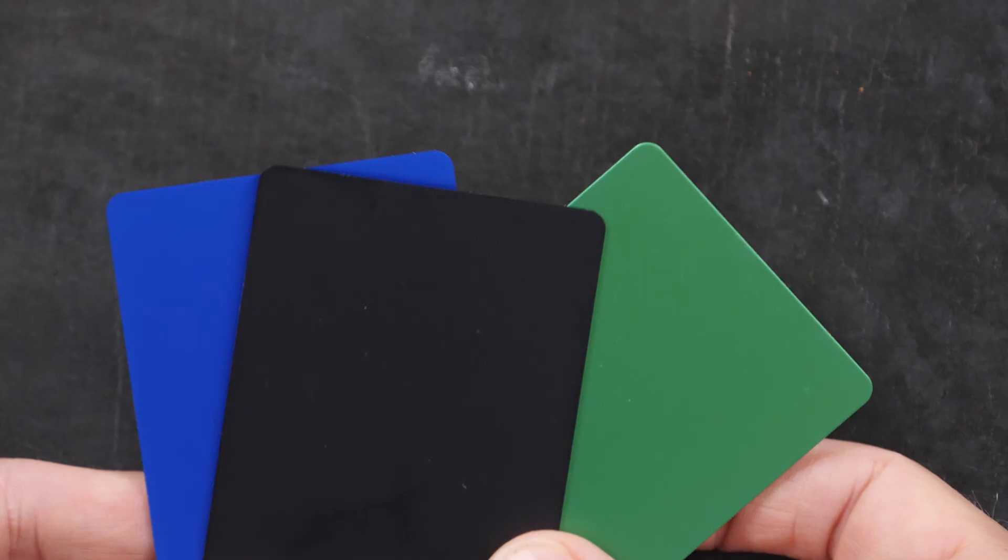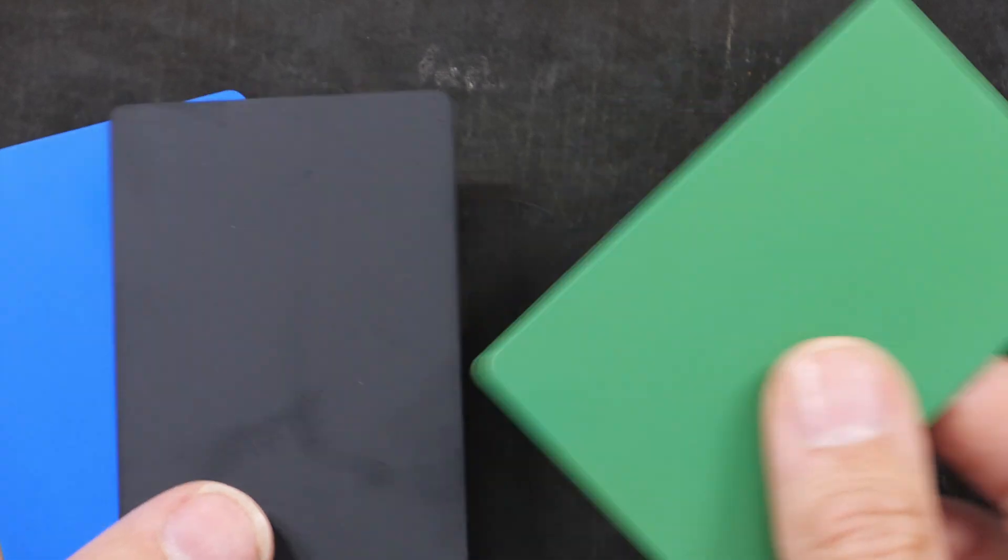The card blanks are 0.8 millimeters thick. They come in different colors too. I've made these in black, blue, and green. So this engraving technique should work on most any anodized aluminum surface, or even a non-anodized aluminum or other metal surface.